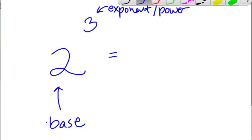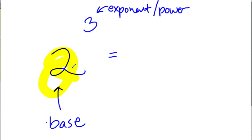Our goal in this video is to look at the laws of exponents. The big numbers are called bases, and the little numbers up here are referred to as exponents or powers. '2 to the third power' is how you'd read this statement, because 2 is the base and 3 is the exponent — or you could say '2 to the exponent of 3.'